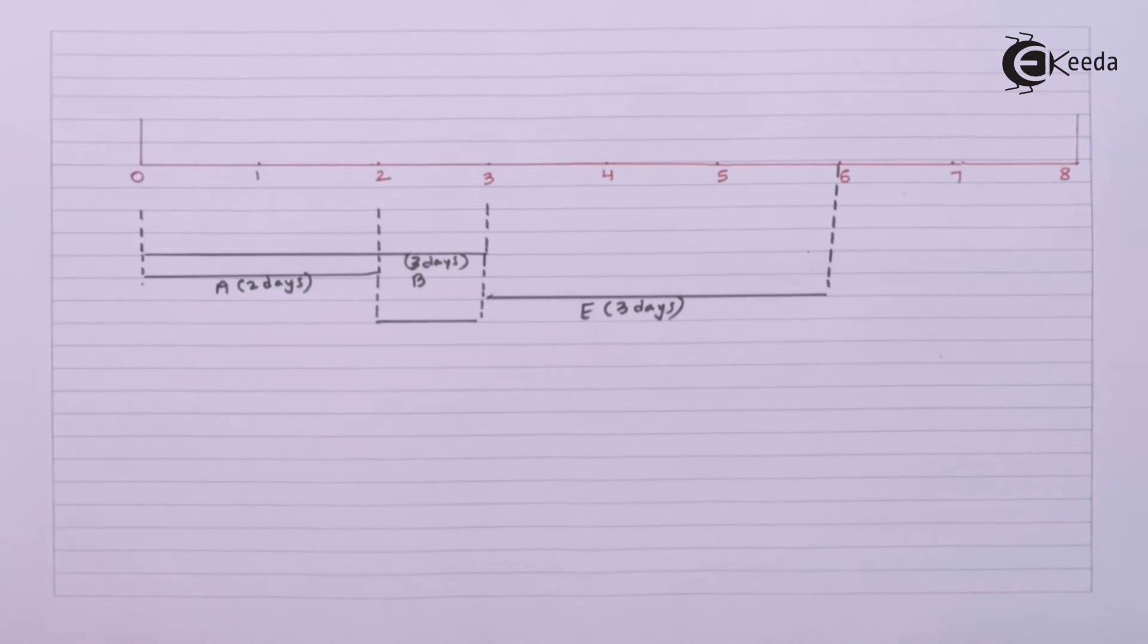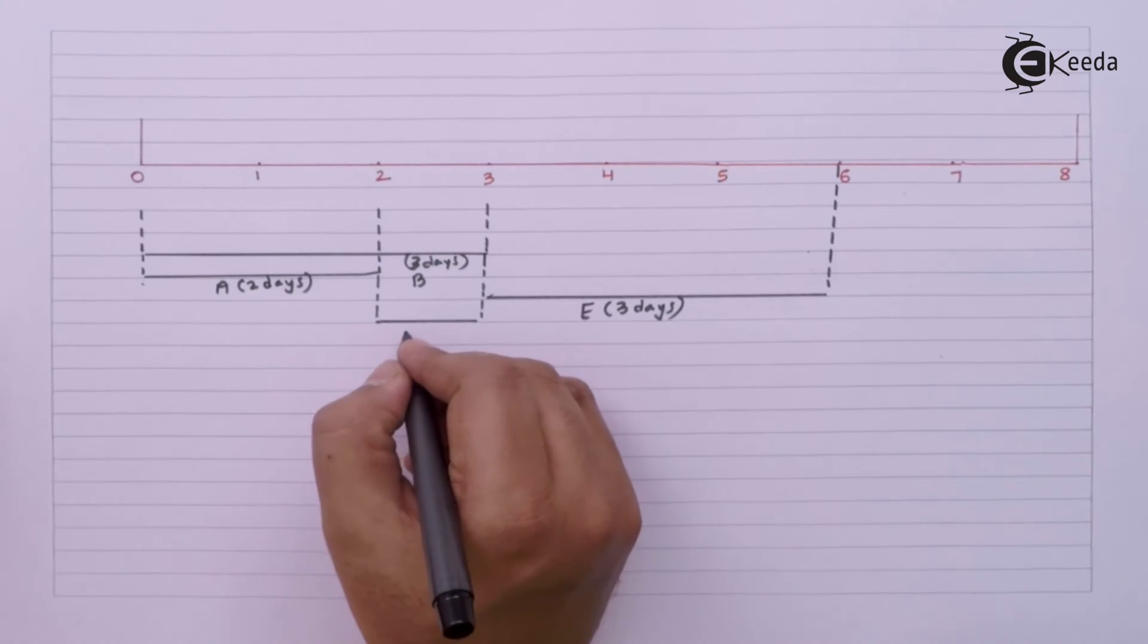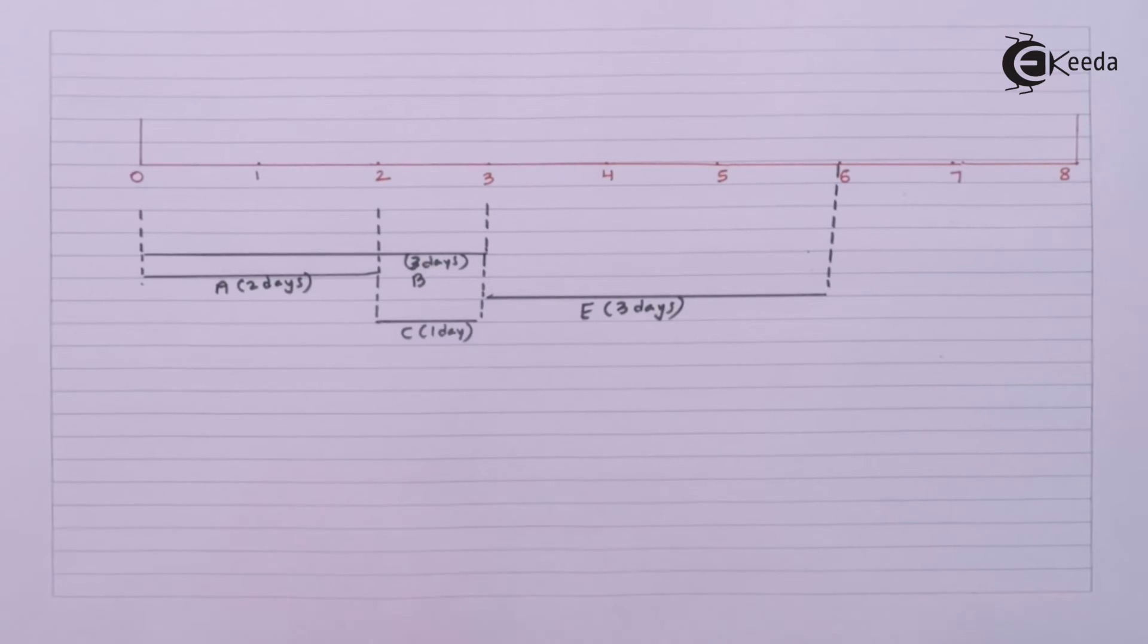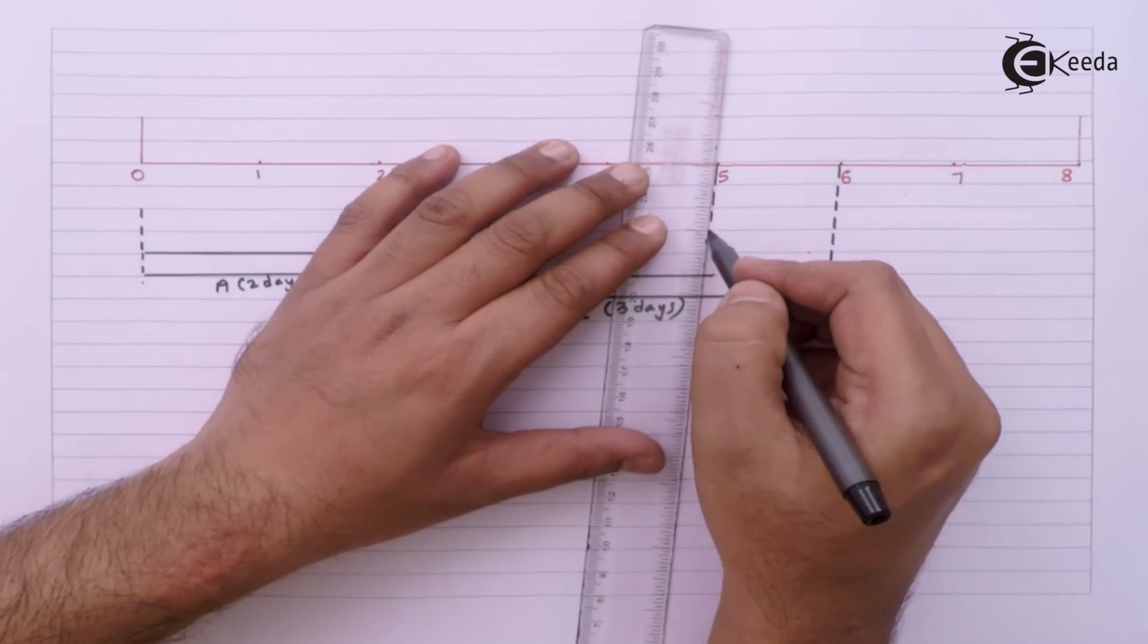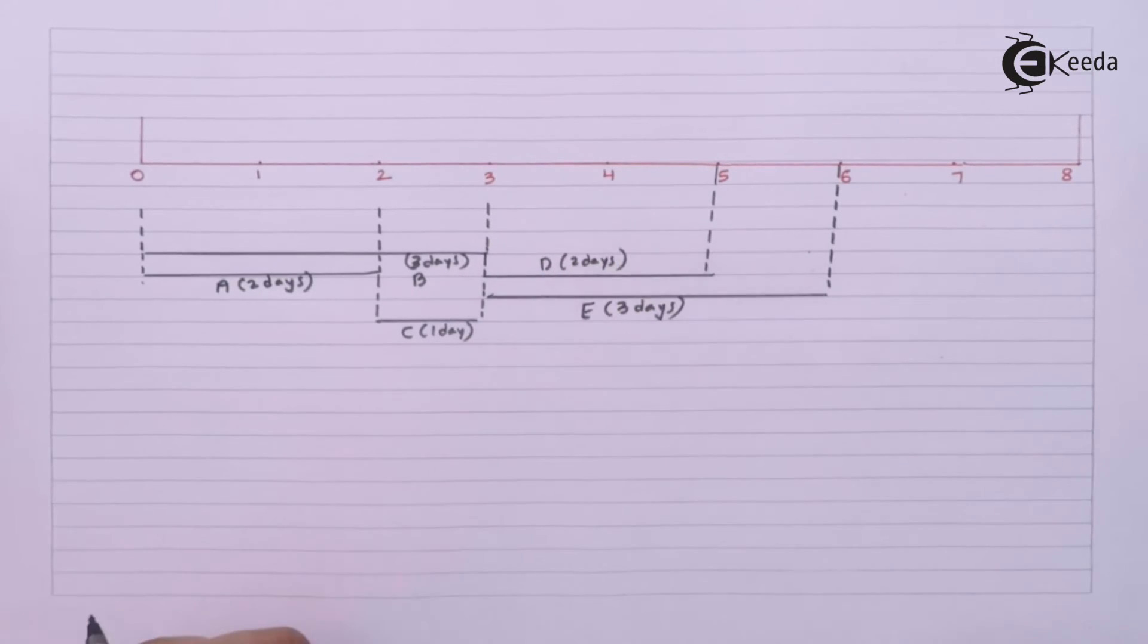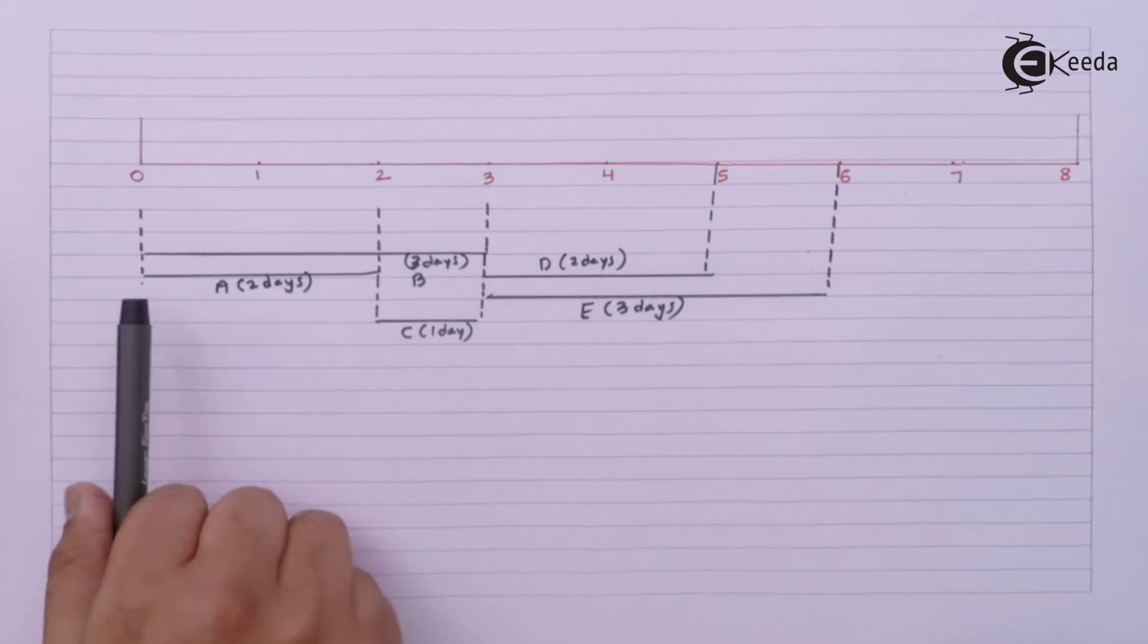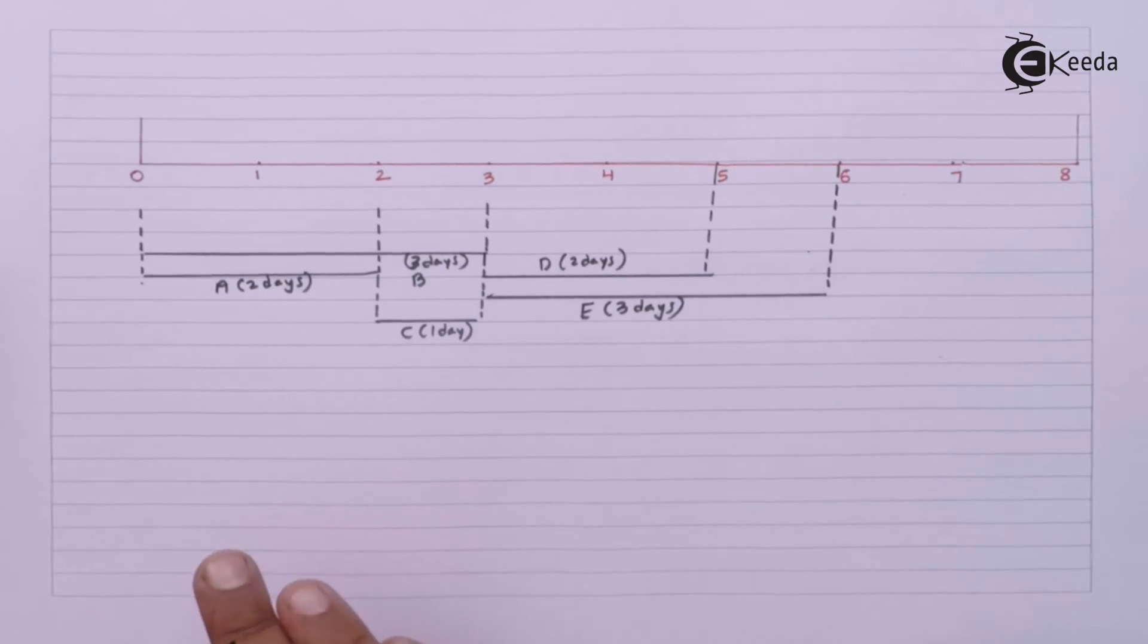After completion of A for 1 day, we have C. And then we have D after completion of B for another 2 days. So I will start with A for 2 days. We started with B for 3 days. After A we started C for 1 day. After B we started D for 2 days. Now after A, B, C, D, and E, we have just F.